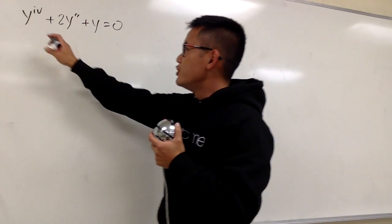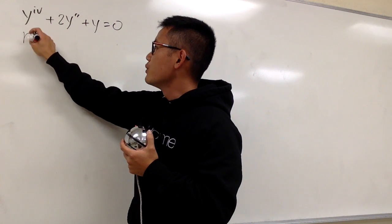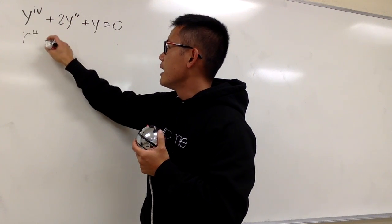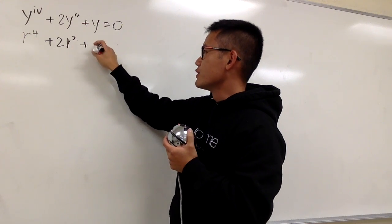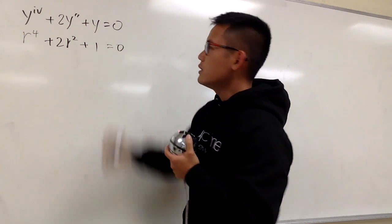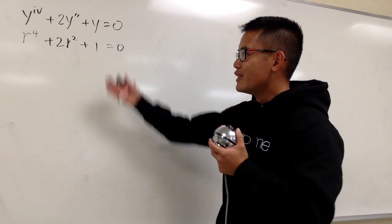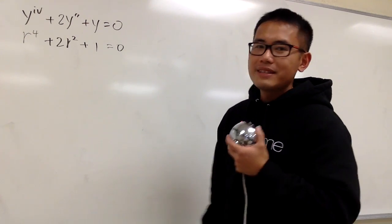So you can just go ahead and change the fourth derivative into r to the fourth power, and then plus 2r squared, and then for the original, it has no r, so it's just plus 1, and this is equal to 0. So our job right now is to solve for r, and then we will see what we get from there.